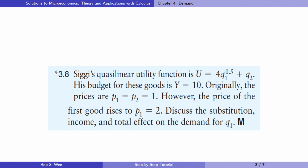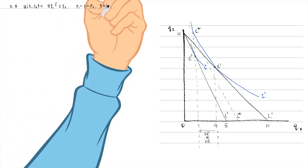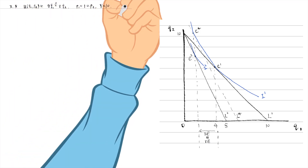Let's solve exercise 3.8. The consumer's quasi-linear utility function is as follows. His budget is Y equals 10. Originally, the prices are P1 equals P2 equals 1. However, the price of the first good rises to P1 equals 2. Discuss the substitution, income, and total effect on the demand for Q1. This exercise is also about decomposing the total effect of a price change into a substitution effect and an income effect using the quasi-linear utility function. We can solve the problem in four steps.